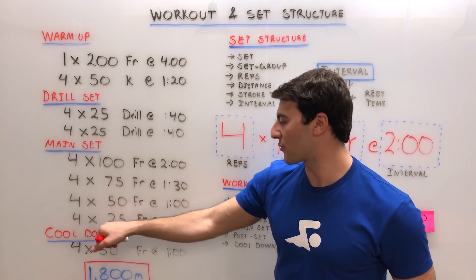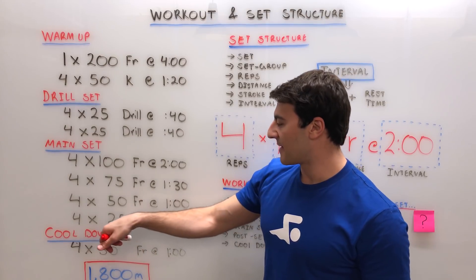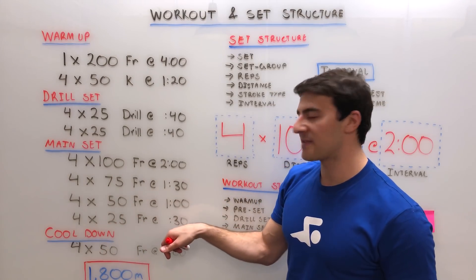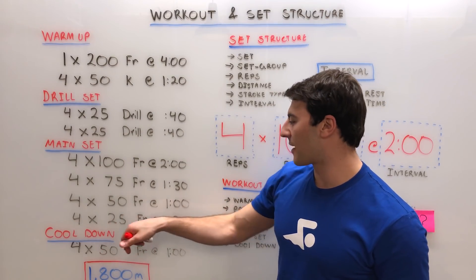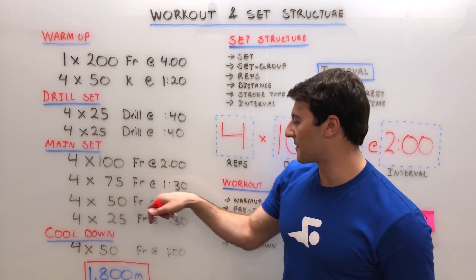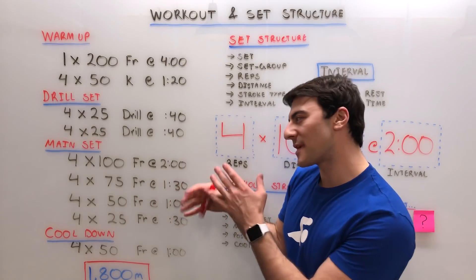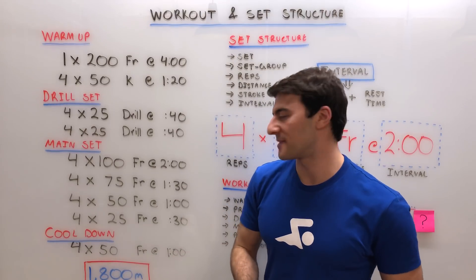For example, 4x25s on the 30 seconds means that for every 25 yards, it takes 30 seconds. If we double that to 50, it'll take a minute; 1:30, two minutes. So that's what I believe the goal of this main set to be.